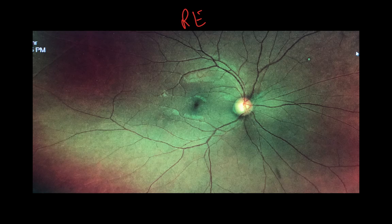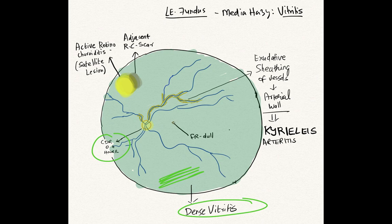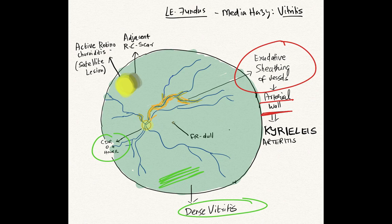The right eye fundus was pretty much normal, whereas the left eye fundus showed dense vitritis. There was also disc-normal appearance, but you can see the vessels arising from the disc with some yellowish lesions or exudates surrounding the vessels. This exudative sheathing was more noted on the arterial wall rather than the veins, and this is named Kyrieleis arteritis — a very important and classic finding in toxoplasmosis.